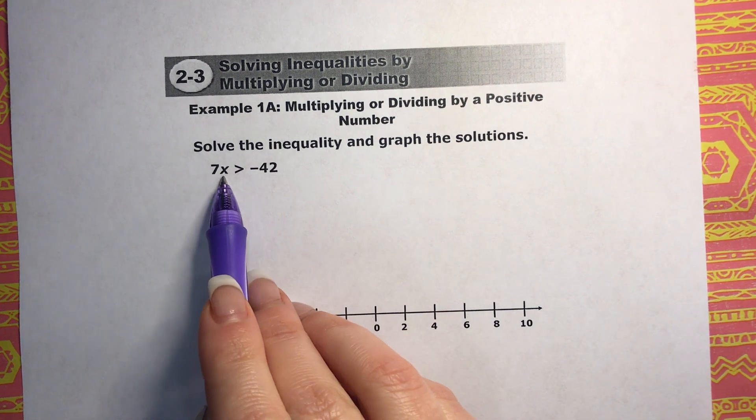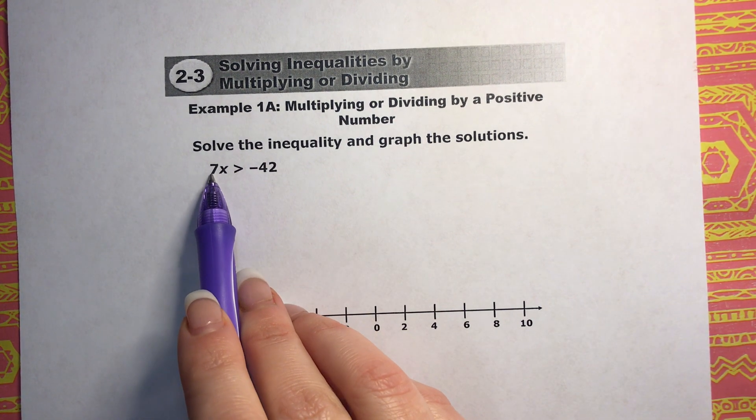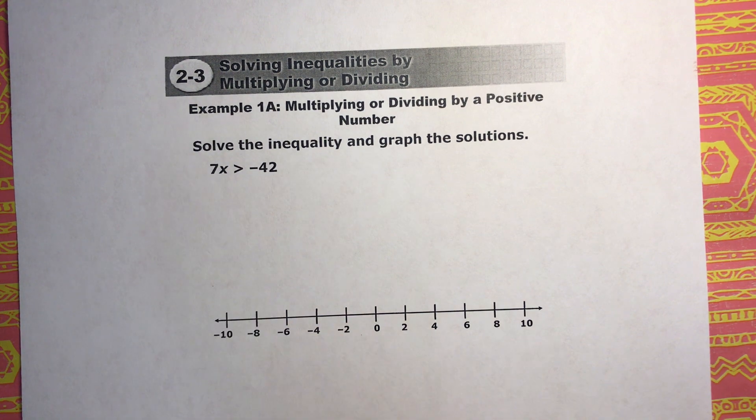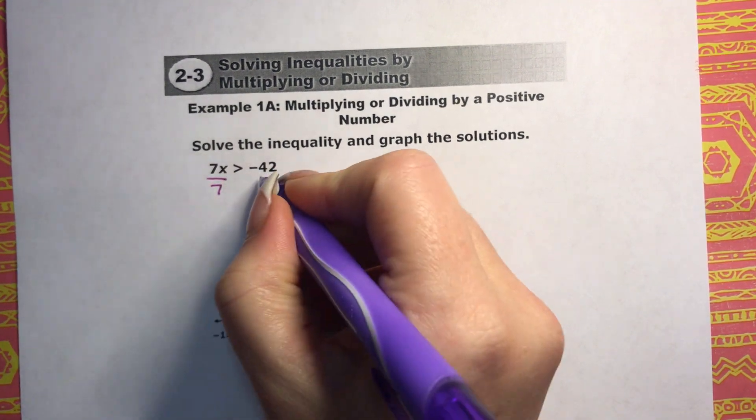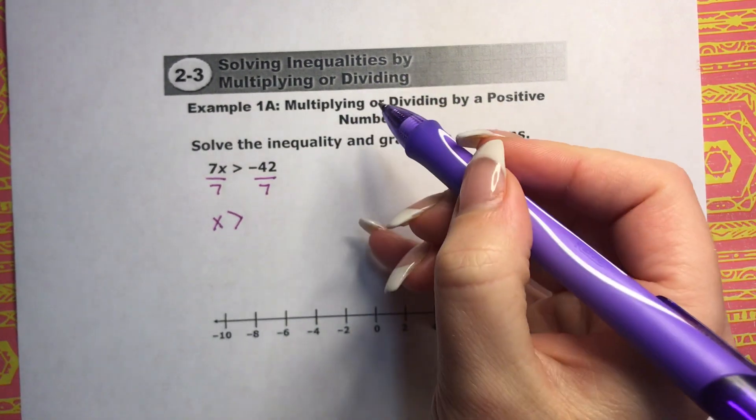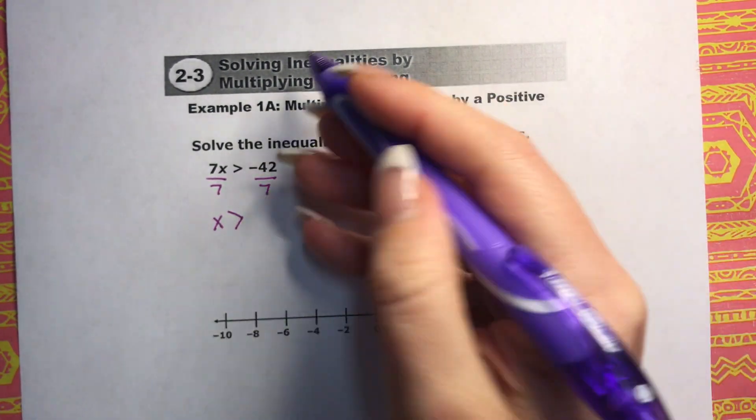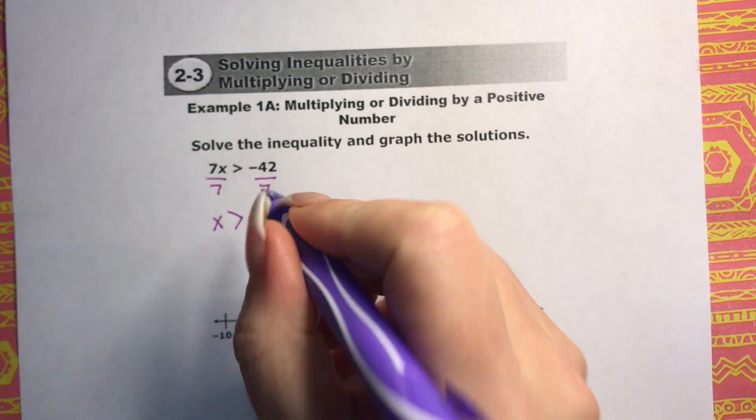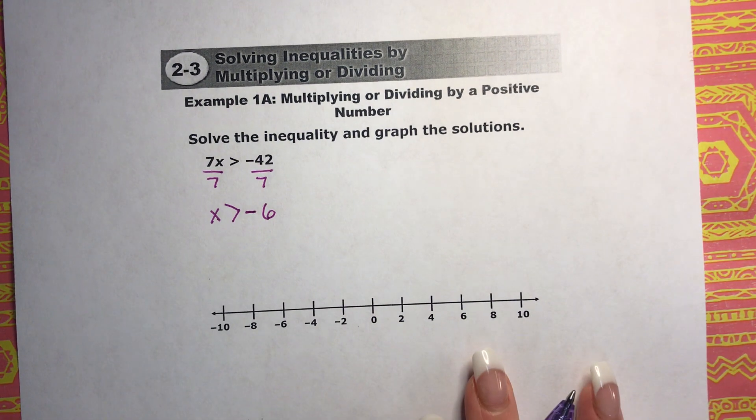So, if we're trying to get x by itself, there's a 7, this means 7x is 7 multiplied by x. So we're going to do the inverse operation of multiplication, which would be division. And we basically end up with negative 42 divided by 7, which is negative 6. And then we just need to graph our solutions.